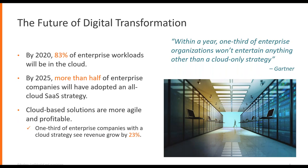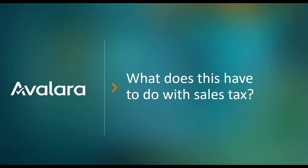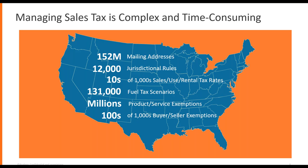What does this have to do with sales tax? Avalara has been in the cloud since we started. Tax is very complex and time consuming — there are 12,000 jurisdictional rules covering state, local, and county taxes. Doing this manually across 50 states with millions of different product and service exemptions is incredibly challenging. Something could be exempt in one state and not in another, which is why tax automation is very important.